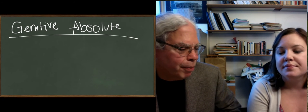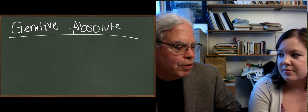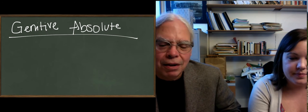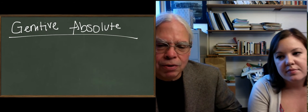The only thing that's grammatically linked in a genitive absolute are the elements to each other. How can this be?